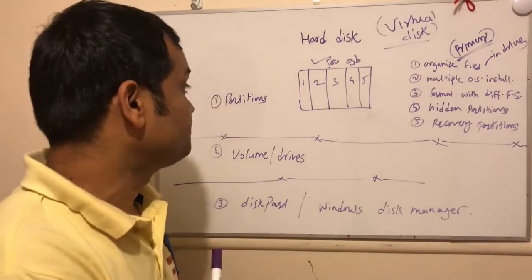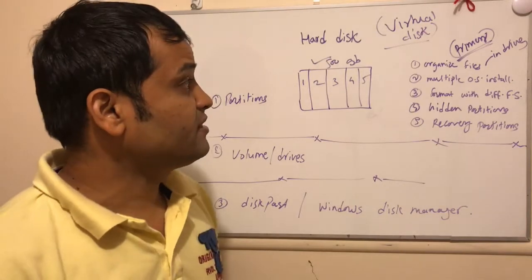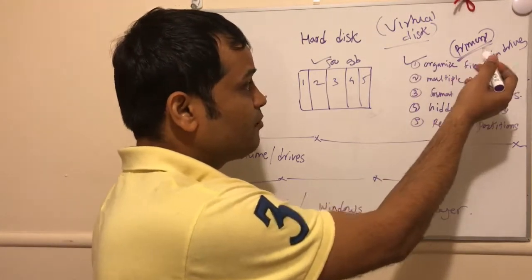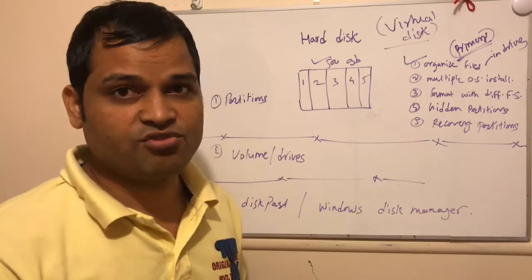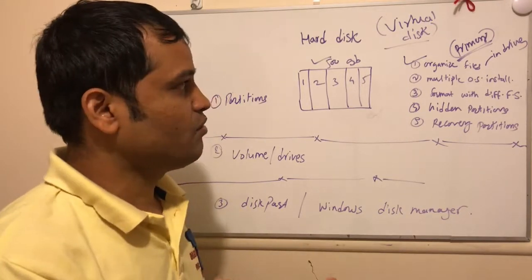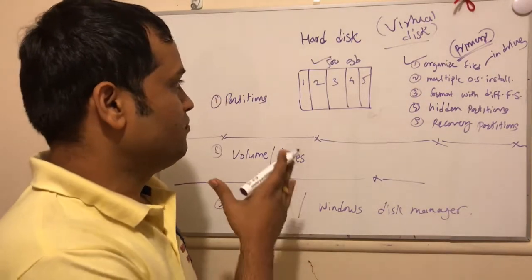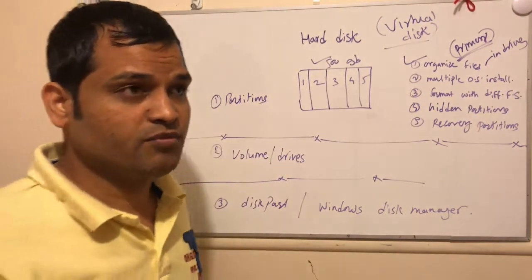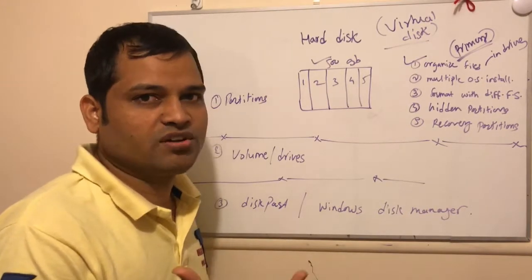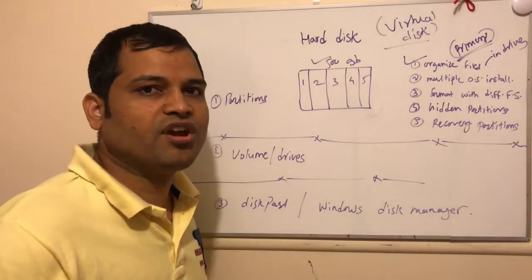The first benefit is we can organize files. We can create primary partitions where we can store files — like C drive, D drive — that kind of drives we can create, which we also call volumes or logical drives. Without partitioning, we have got one hard disk and one logical drive only, so we can just create C drive; we can't create D drive, E drive like that.